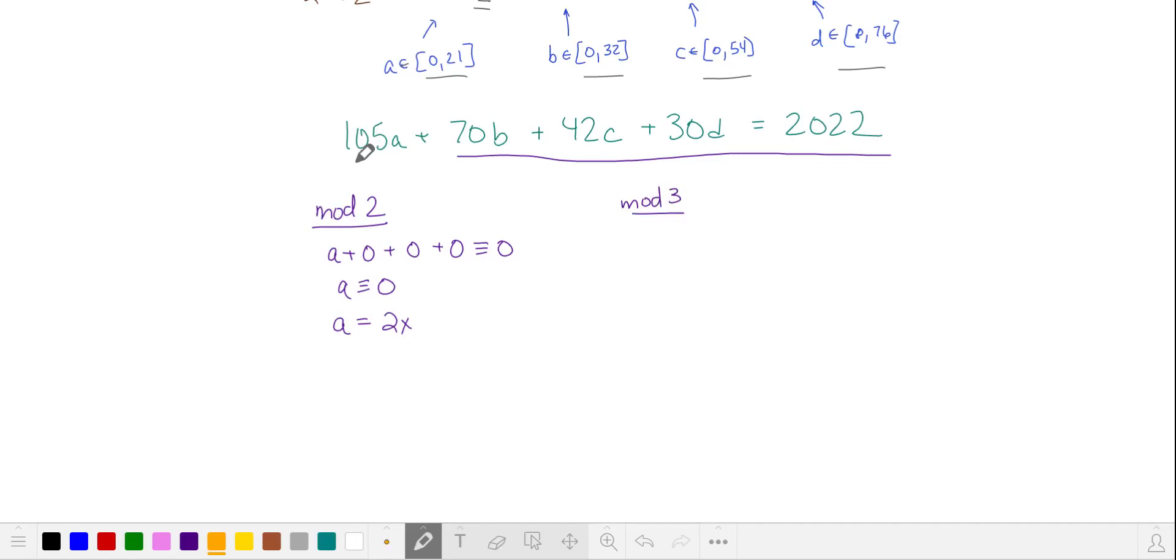Let's try mod 3, because we see that 105, 42, 30, and 2022 are all 0 in mod 3. 70 is 1 in mod 3, so we have b is 0 in mod 3. And b is a multiple of 3, we'll call it 3y.